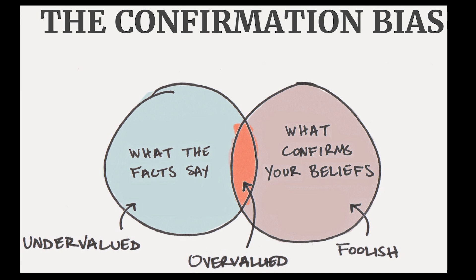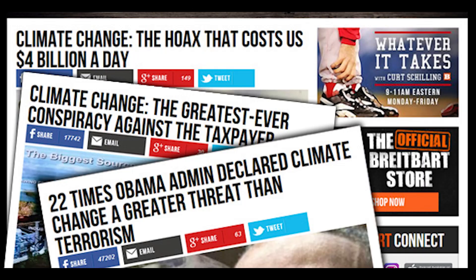Let's start with confirmation bias, or biased assimilation as it's sometimes called. It's the idea that once we have a hypothesis or an opinion about an issue, we will seek out information that confirms that hypothesis and underweight or disregard information that contradicts it. For example, if you think that climate change is a hoax, then you will actively seek out information that confirms that belief and disregard information that says climate change is real.